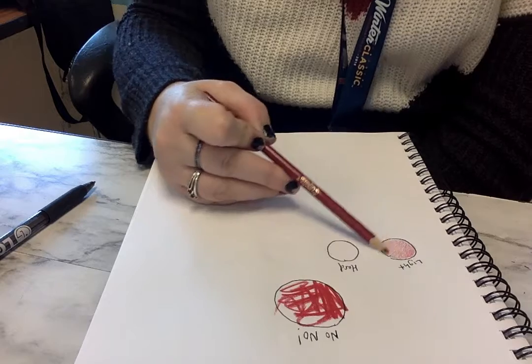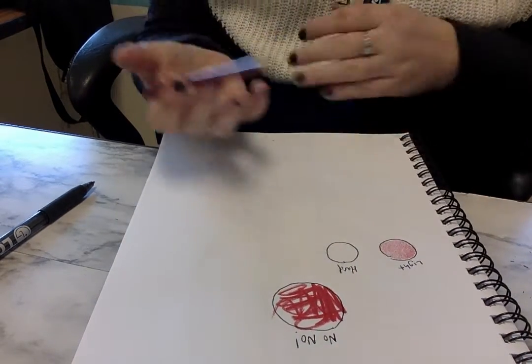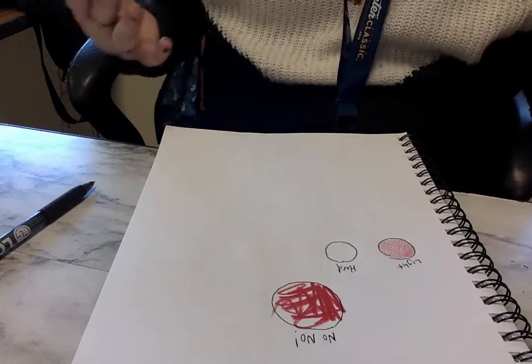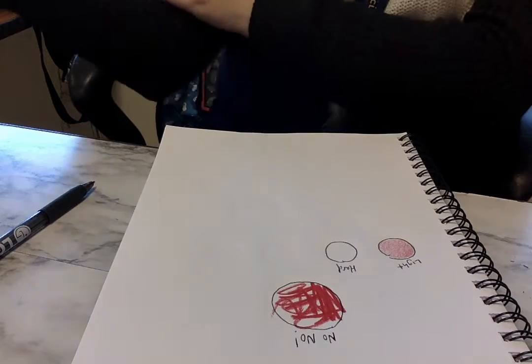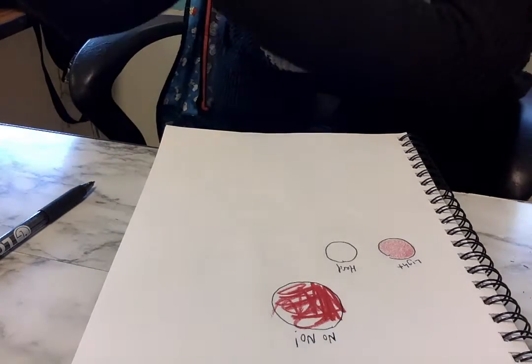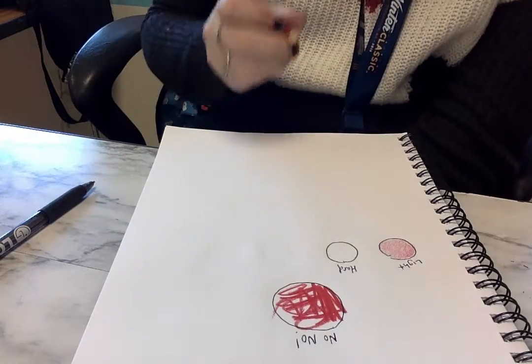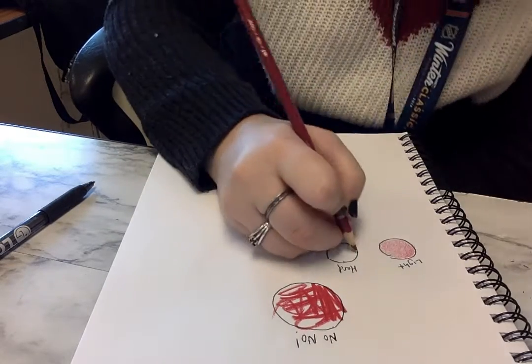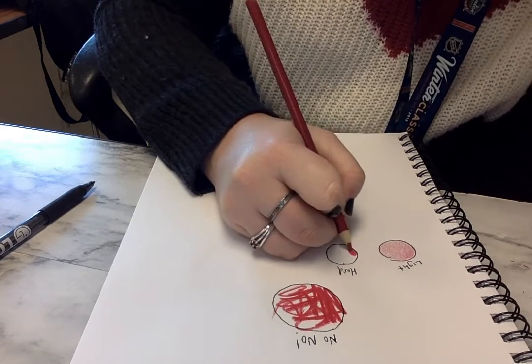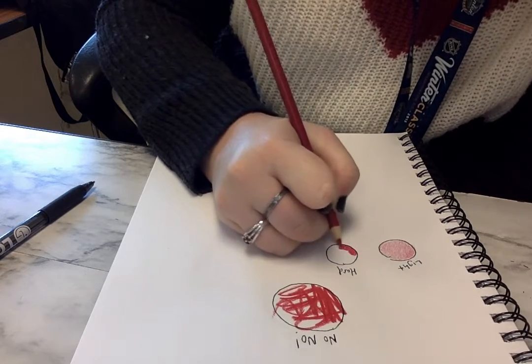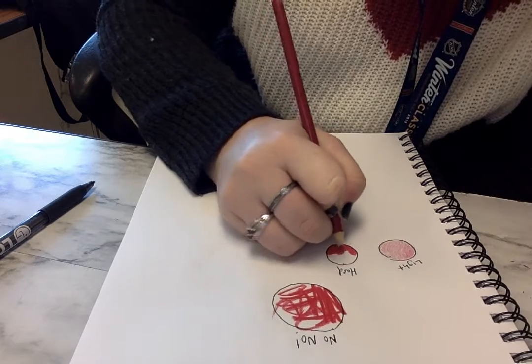Now when you're doing hard pressure, you're going to have to press very hard on your pencil. Don't break the point, but you're gonna get a lot of color. I'm pressing really hard and I'm doing circular motions.